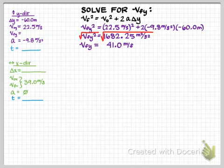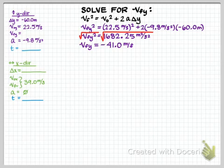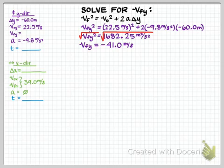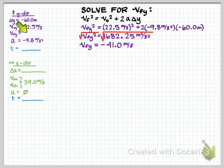This is where you can easily mess up this problem. The cannonball is going down when it hits the ground, so v_final_y must be negative. It's actually negative 41 meters per second. The square root operation won't return a negative value, so you have to track the sign yourself. It may help to write a negative sign next to v_final_y when you first list your variables, to remind yourself it will be negative.